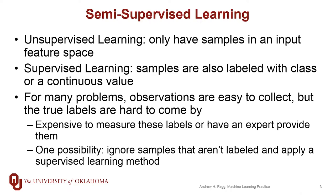For many problems out there, observations are very easy to collect, but actually labeling those samples can be very difficult. For example, it might be very expensive to provide those labels — we may have to hire a domain expert to look at each example and determine the correct label. This might be feasible with a hundred or a couple hundred samples, but once we get into the tens of thousands, hundreds of thousands, or millions of samples, this becomes very infeasible.